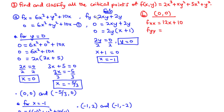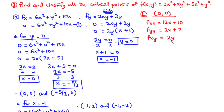We move on to fyy: we differentiate fy with respect to y. We differentiate 2xy with respect to y to get 2x, and differentiate 2y to get 2. So fyy equals 2x plus 2. For fxy, we differentiate fx with respect to y: 6x squared goes to 0, 10x goes to 0, and y squared gives 2y. So fxy equals 2y.